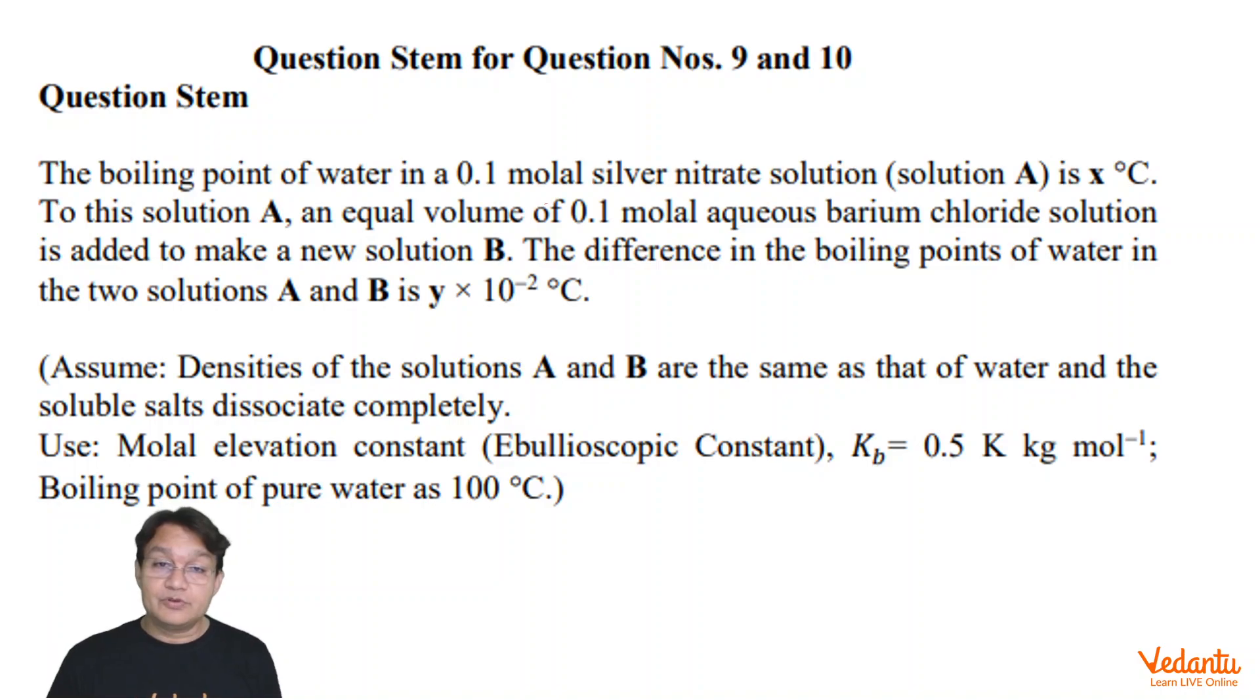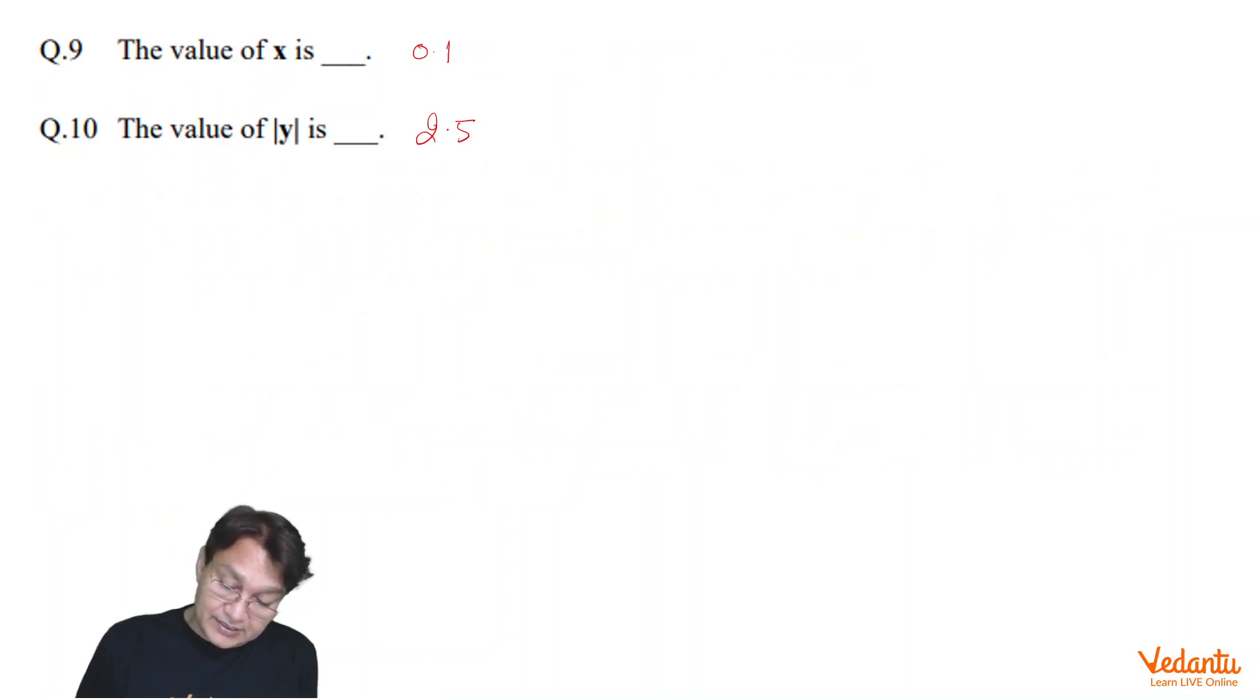an equal volume of 0.1 molal aqueous barium chloride solution is added to make a new solution B. So, solution A is basically 0.1 molal AgNO3 solution